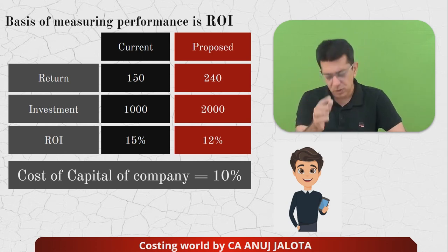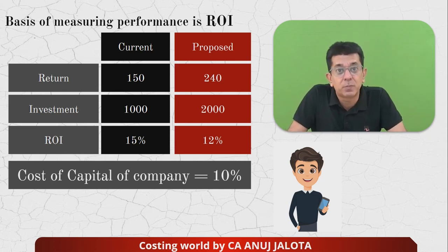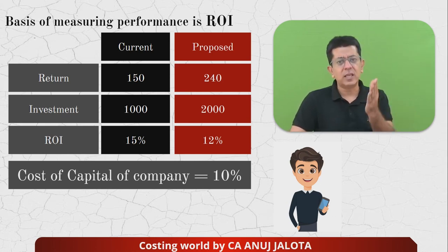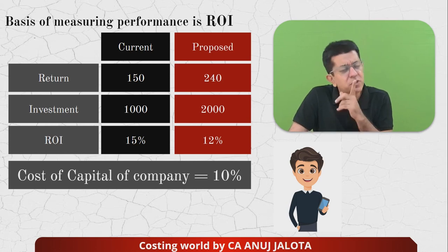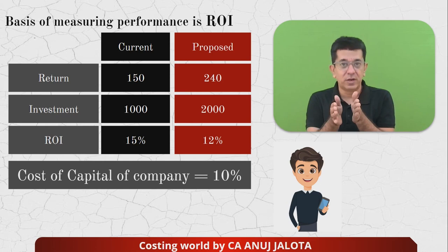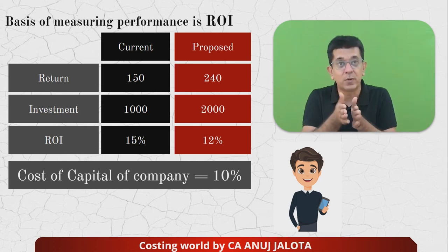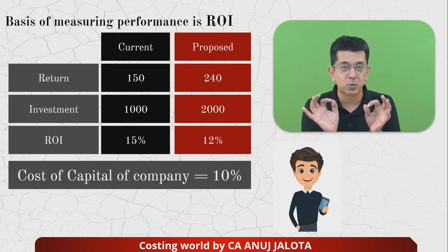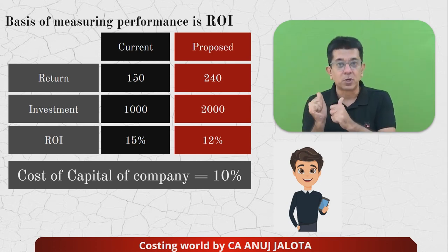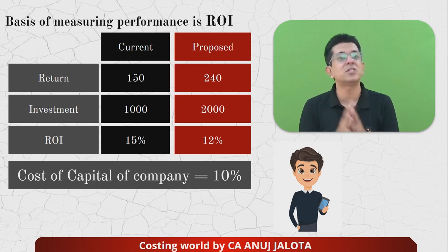If you were in place of Mr. A and being evaluated based on ROI, you would think: currently my division fetches 15% ROI. If I undertake this new project with a lower ROI of 12%, my overall division ROI will fall. So Mr. A would reject such proposals because his ROI — and therefore his performance rating — would decline. From his point of view, this proposal looks bad because the new project's ROI is lower than his current 15%.